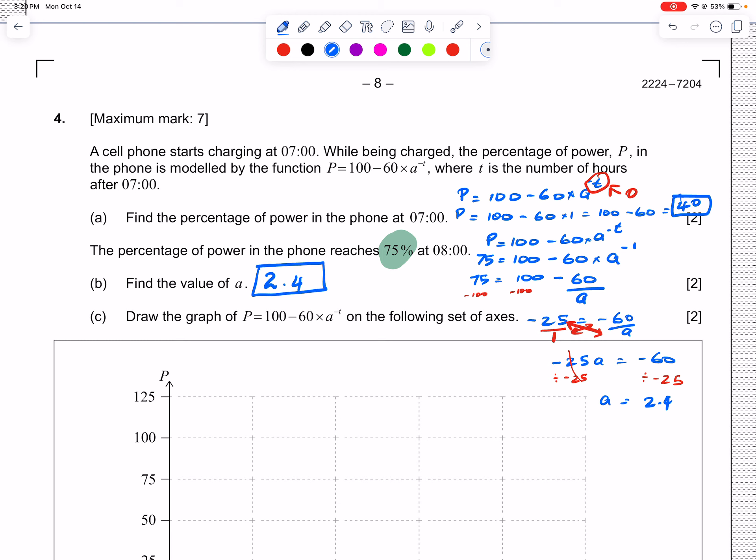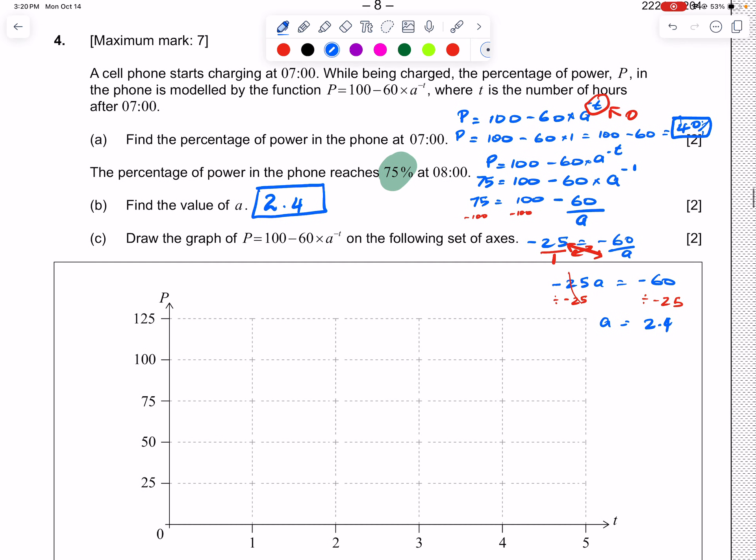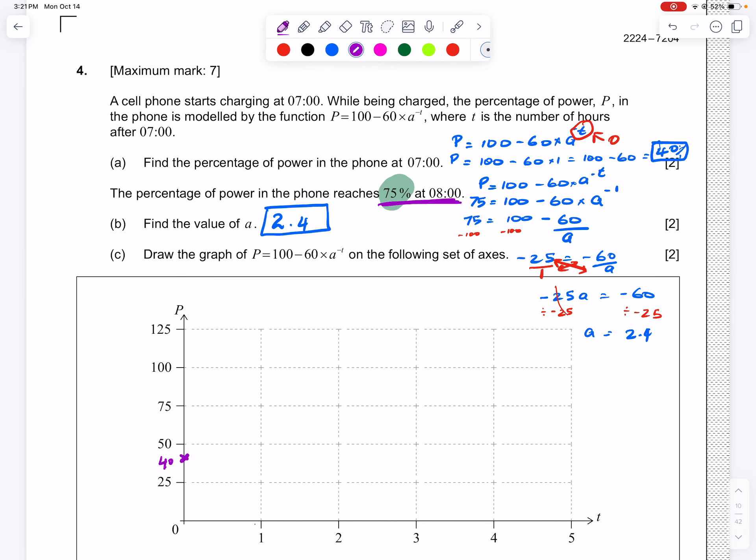Now we know our answer for part a is 40% and our answer for part b is 2.4. Now it's asking us to draw the graph of that function. We already found the first point: when no time has passed, power is 40%, so that goes around here. Then the question also told us that when one hour has passed, our charge is 75%, so that's right here at 75%.